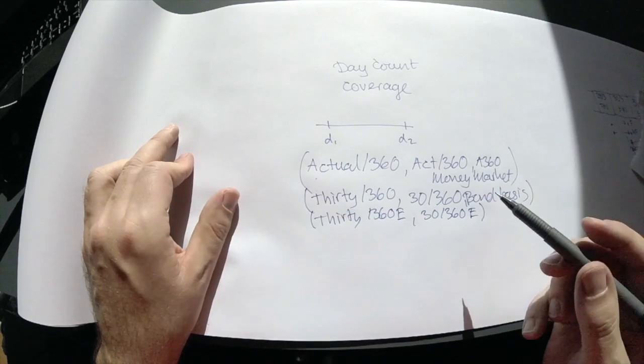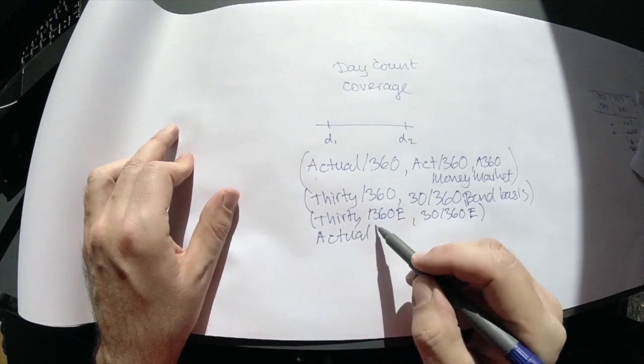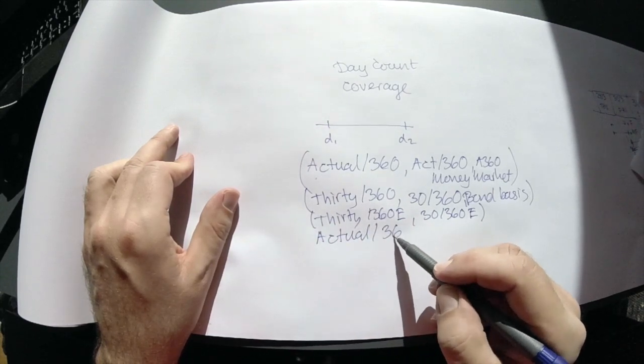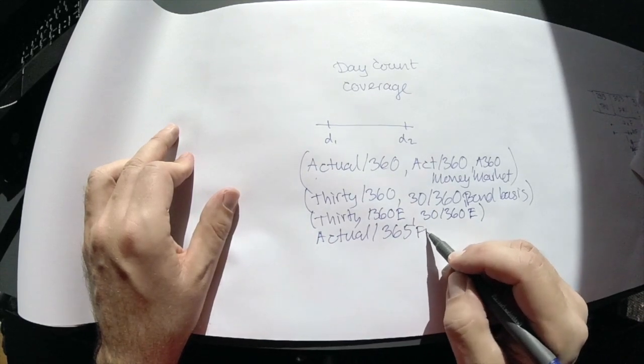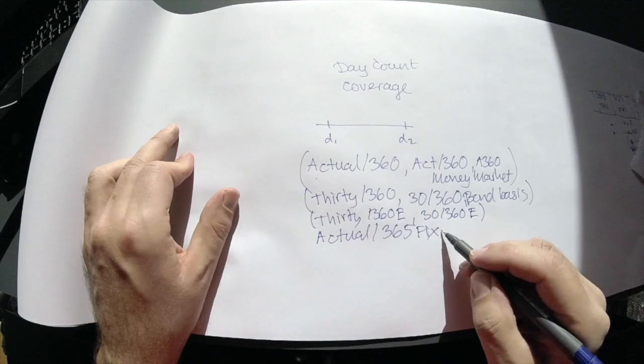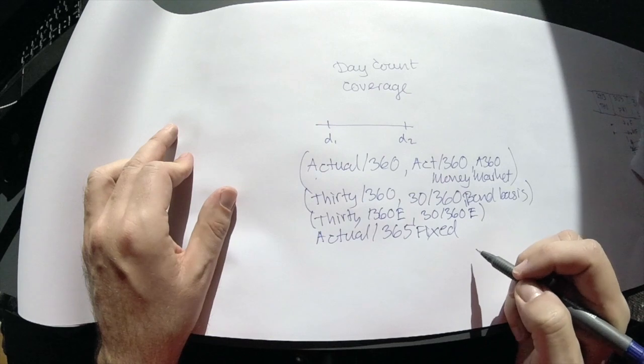At other times, we look at cases where we have the actual number of days and get a bit more accurate. We actually assume that there are always 365 days in a year, which is true three quarters of the time.